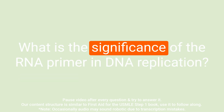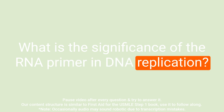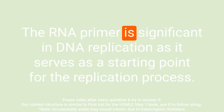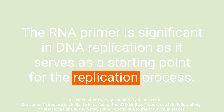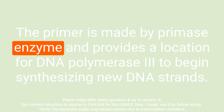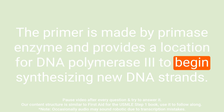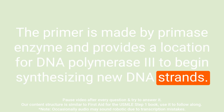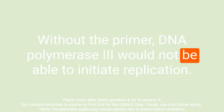Question: What is the significance of the RNA primer in DNA replication? Answer: The RNA primer is significant in DNA replication as it serves as a starting point for the replication process. The primer is made by the primase enzyme and provides a location for DNA polymerase III to begin synthesizing new DNA strands. Without the primer, DNA polymerase III would not be able to initiate replication.